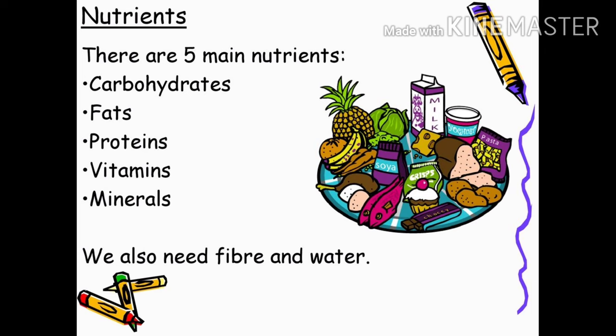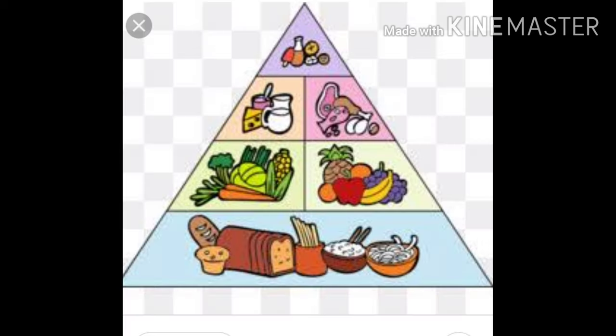There are five nutrients: carbohydrates, fats, proteins, vitamins and minerals. And along with these five nutrients, we also need fiber and water.